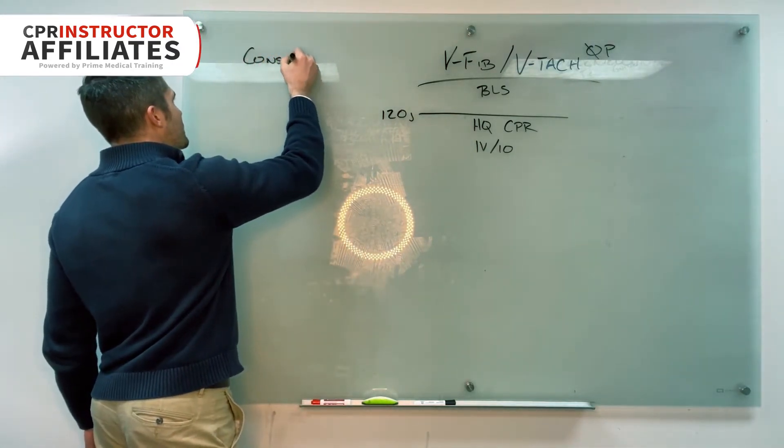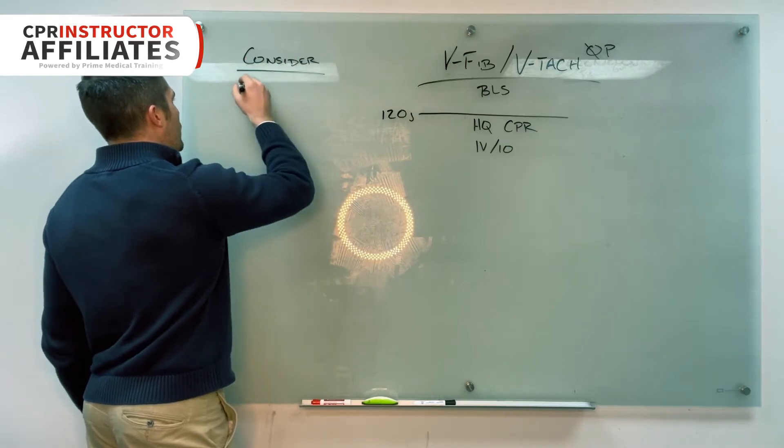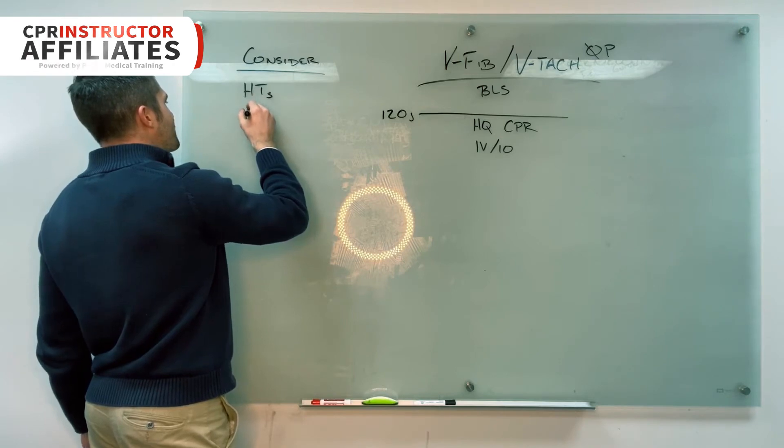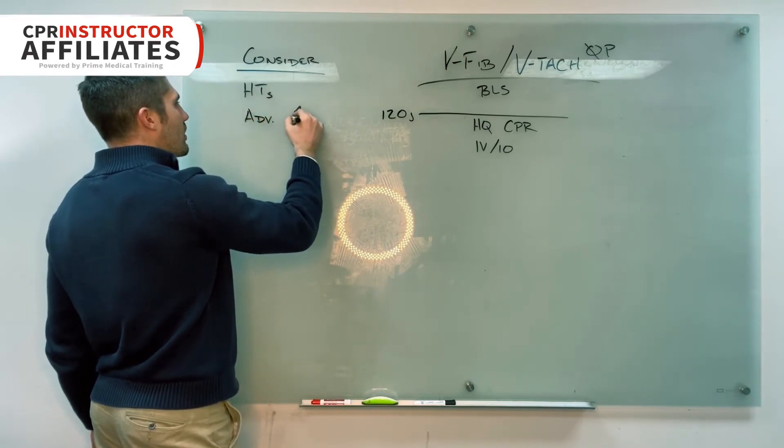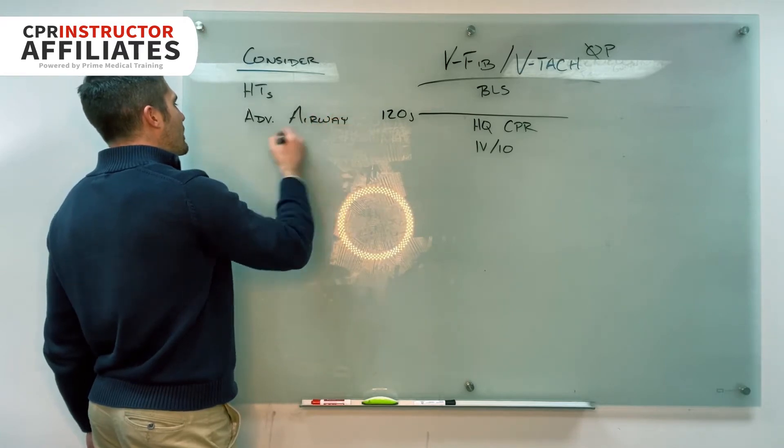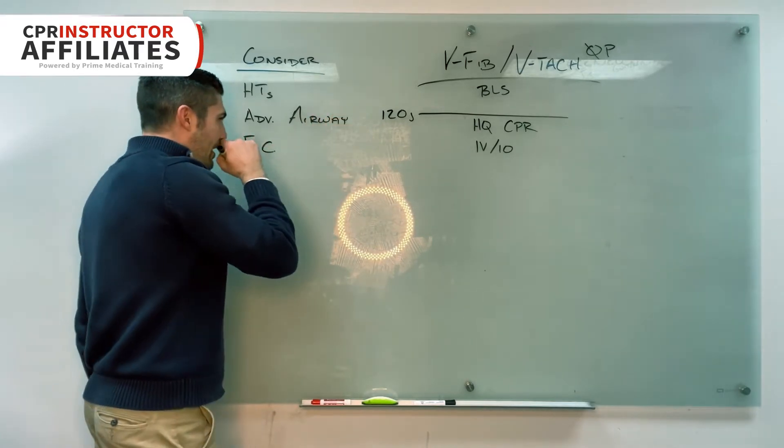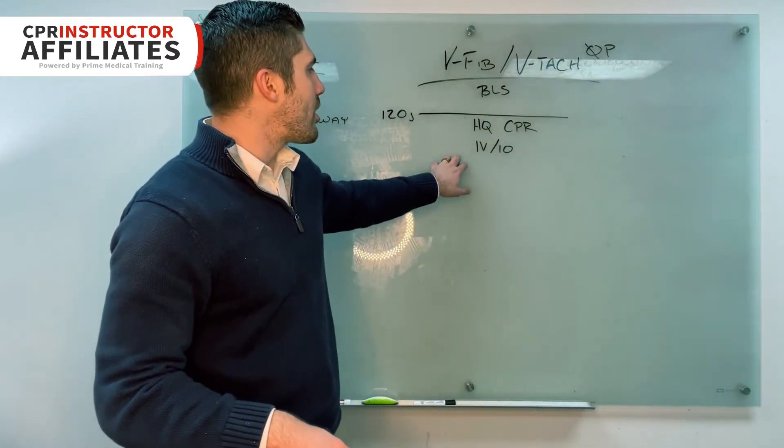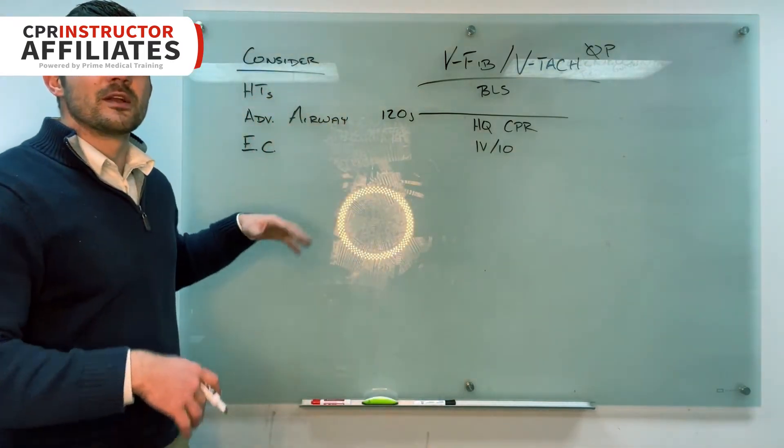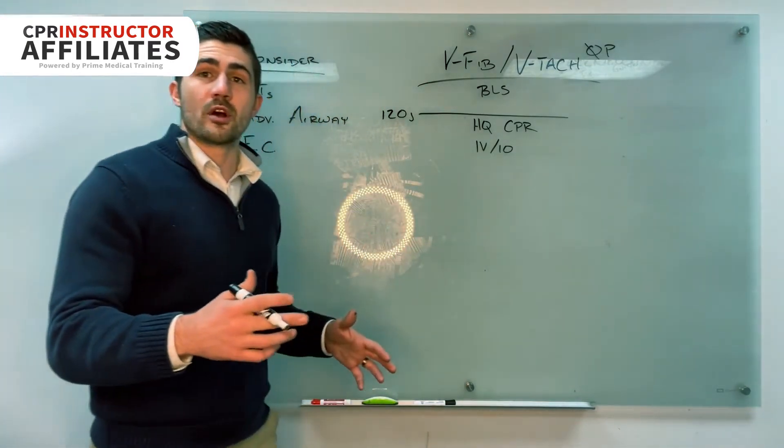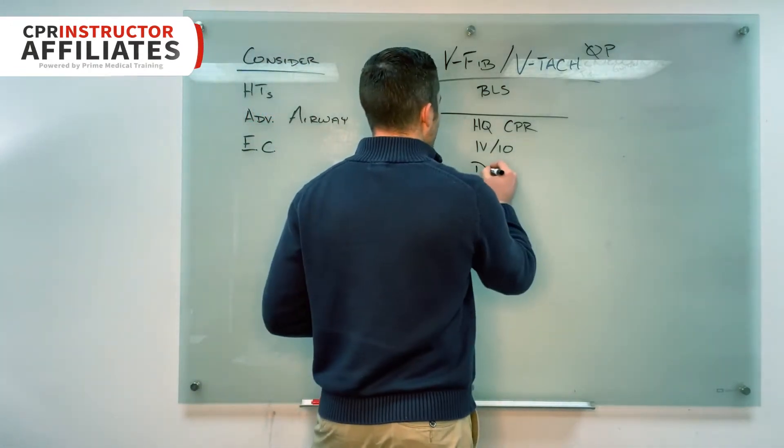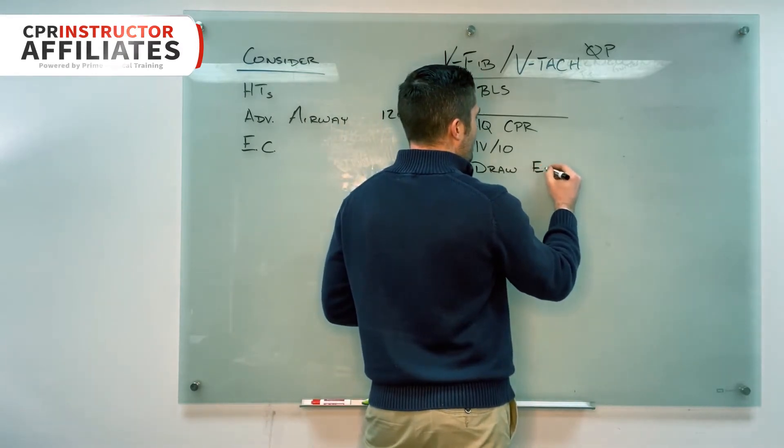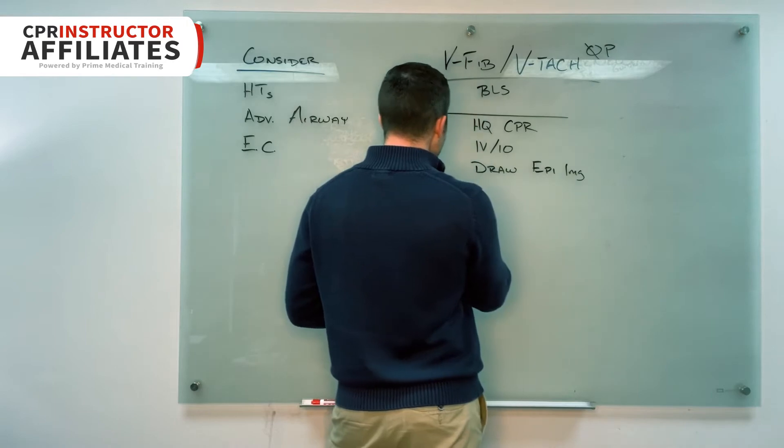So then during these two minutes other than CPR what are we supposed to be doing? I get the answer IVIO. And then so what else can we do as a team collectively, what should we be doing? And they'll say we're considering some things. That's right. So I'll put it over on the side here: Consider. What are we considering? We're considering our H's and T's, we're considering an advanced airway, and we're also considering expert consultation. Alright, back to the algorithm then. So with this we're only going to do CPR and get our IV, do our considerations for two minutes. We're not going to give any drugs. We can draw up drugs. So I'll say what's the first drug we're going to draw? I'll write draw here and they'll say epi, one milligram. Great.